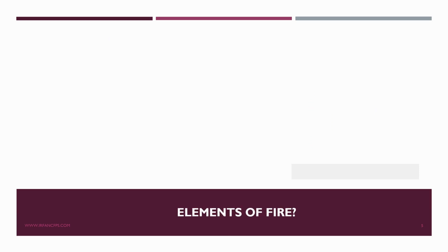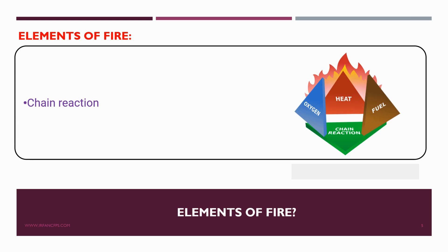Further research into fire led to the conclusion that a fourth element was a necessary component of fire, which is a chemical chain reaction. You can find the fire tetrahedron on your screen, which shows four elements of fire: number one, oxygen; heat; fuel; and finally, chain reaction.